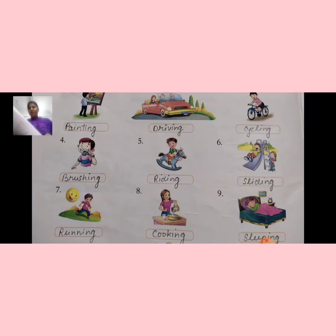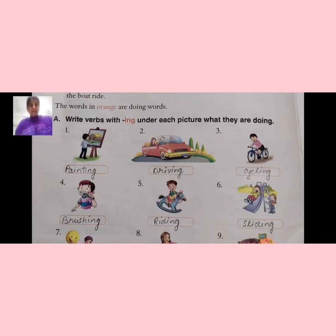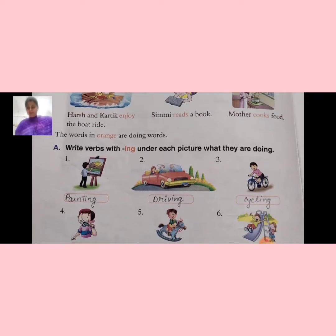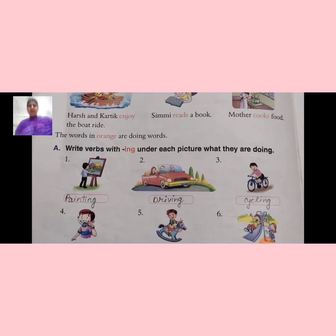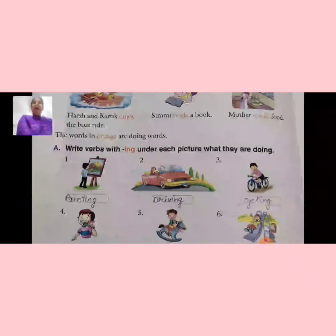Let's start page number 18. In page number 18, exercise number A: write verbs with ING under each picture — what they are doing.